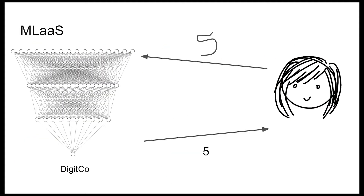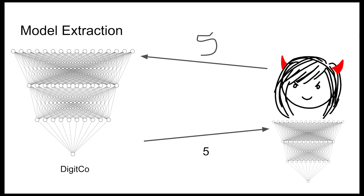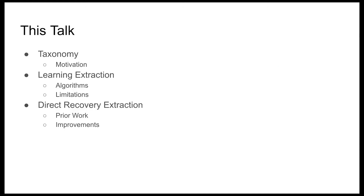Our talk starts with a common setup: machine learning as a service. DigitCo has trained a very good handwritten digit recognition model, and Alice is willing to pay to use it. Alice identifies a handwritten five, sends it to DigitCo, DigitCo runs it through the model, finds out it's a five, and sends that information back to Alice. However, if Alice is malicious, she can use this input-output interaction to steal the model. This attack is known as model extraction and is the focus of our talk. Today I'm going to be discussing three parts of our paper: a taxonomy we introduced for model extraction, and improvements to two types of extraction attacks — learning-based extraction and direct recovery extraction.